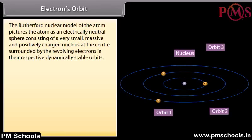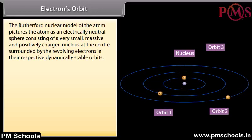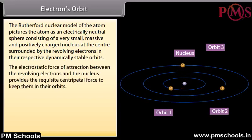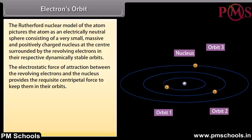Electrons orbit. The Rutherford nuclear model pictures the atom as an electrically neutral sphere consisting of a very small, massive, and positively charged nucleus at the center, surrounded by revolving electrons in their respective dynamically stable orbits.